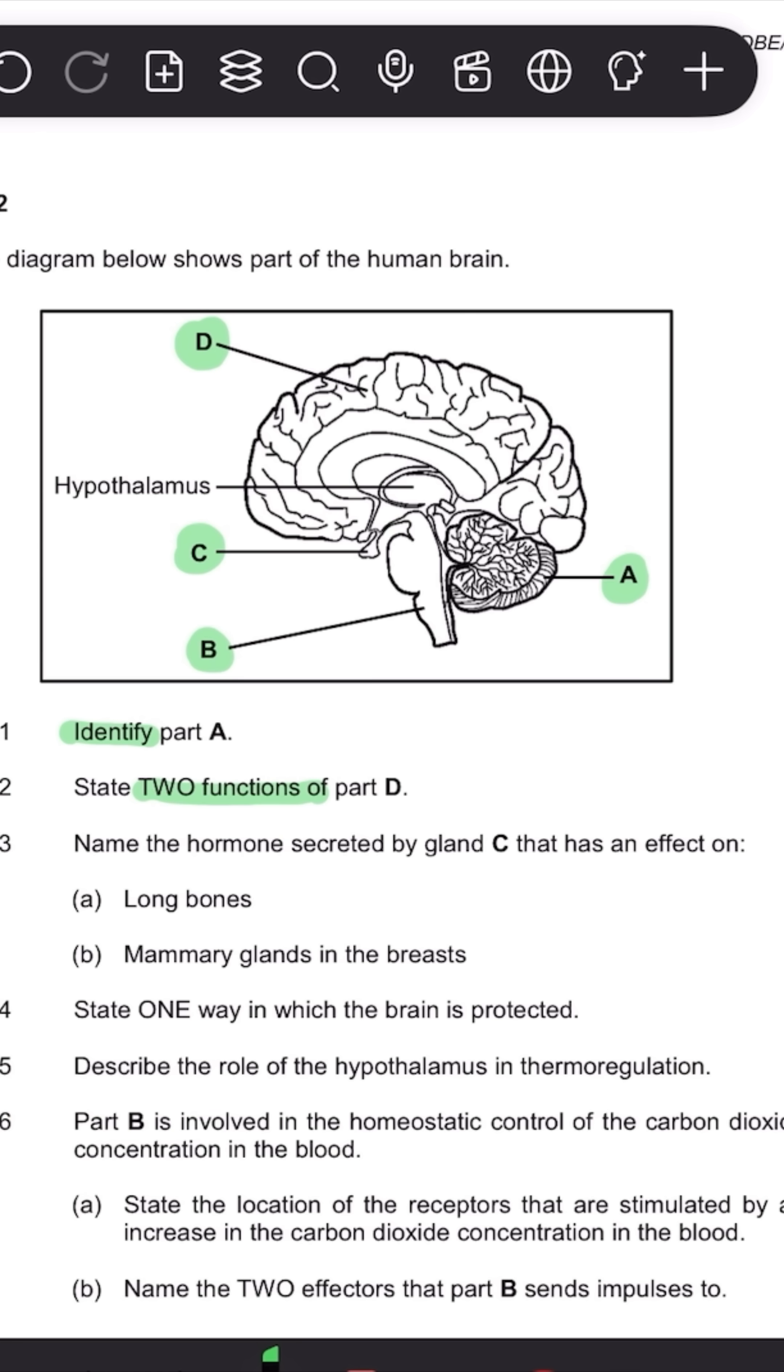Then the next one is name the hormone. So now note the hormone, but also remember what is gland C. So you see, they don't ask you what is gland C. So just make sure gland C is already written so you know all the hormones that are secreted at gland C. And then you can answer that.